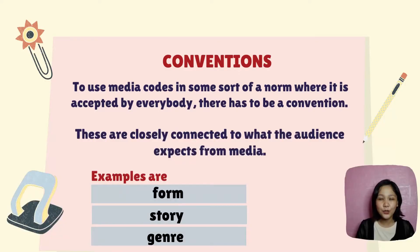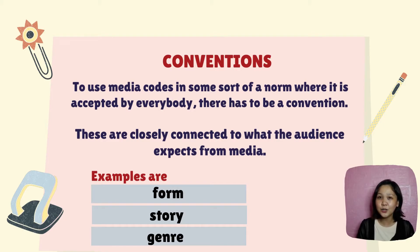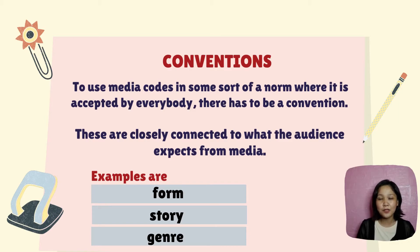Conventions: to use media codes in some sort of norm accepted by everybody, there has to be a convention. These are closely connected to what the audience expects from media. Examples are form, story, and genre.